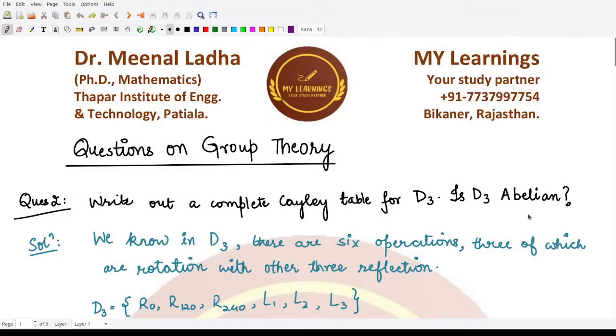Hello everyone, welcome to this video. We'll be looking at another question in continuation with the previous video. The question is: write out a complete Cayley table for D3. In the previous video, we studied D3, which is a dihedral group of order 6 (3 times 2, that is 2n). There are six operations, three of which are rotations and three are reflections.